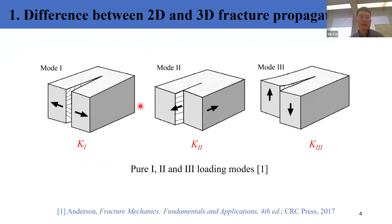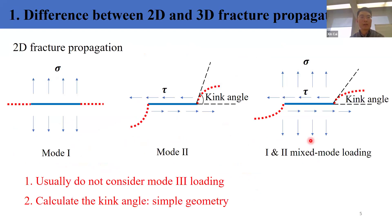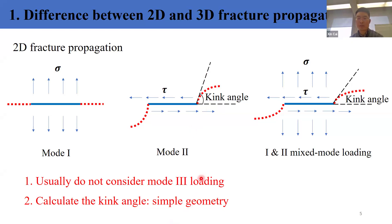There are three different loading modes to drive fracture propagation: mode one is the opening mode, mode two is in-plane shear, and mode three is out-of-plane shear — corresponding to stress intensity factors K1, K2, and K3 respectively. In the 2D case we mostly don't consider mode three loading, and all cases basically require considering the kink angle — the angle between the previous fracture plane and the new fracture plane. Overall, for 2D cases the geometry is relatively simple.